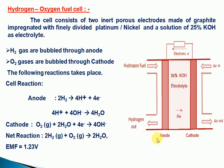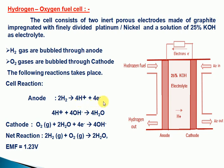Hydrogen gas is bubbled through the anode continuously, and oxygen gas is bubbled through the cathode continuously. Chemical reactions take place to generate electricity. At the anode, oxidation occurs: 2H₂ → 4H⁺ + 4e⁻. The 4H⁺ reacts with the electrolytic OH⁻ for the formation of water molecules.